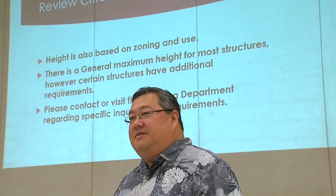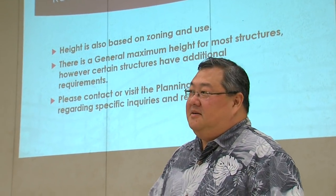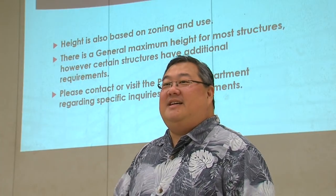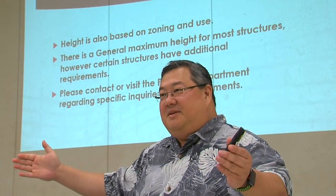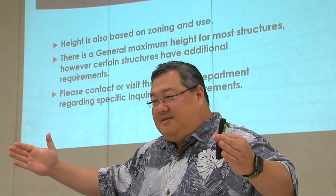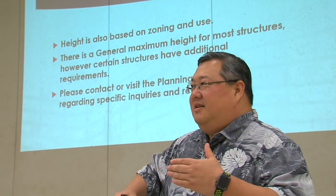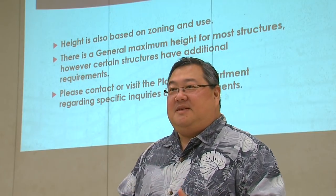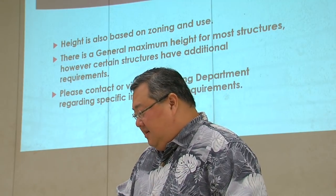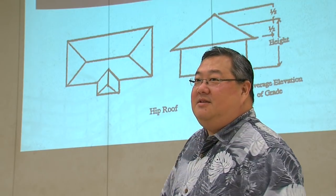The other criteria we use is height. Height is managed through your zoning and your use. For instance, a very extreme use — a cell tower — given so many feet, every time it increases in height, there is a commensurate increase in the setback. So it's very use-specific and also very zone-specific. But in general, for a dwelling, this is how we determine height.